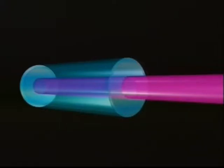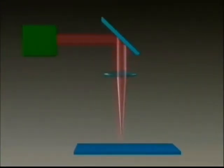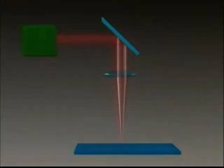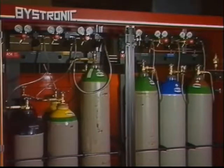Laser light is amplified by reflection between the mirrors in the laser cavity, and finally leaves the cavity via the partially transparent mirror as a laser beam. This beam is transmitted over some distance, which may be short or quite long depending on the type of system. Finally, it reaches the processing head where it is focused to a small spot by means of lenses or mirrors.